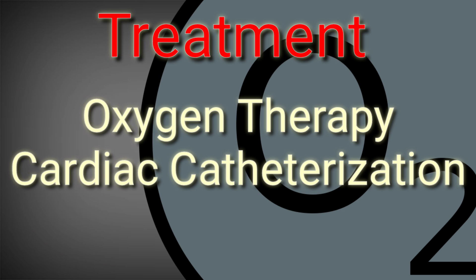Oxygen therapy or a ventilator can help with breathing and ensure both mother and baby receive enough oxygen. A healthcare provider may request insertion of a pulmonary artery catheter to monitor heart function. Medications may also be used to manage blood pressure, and multiple blood platelet and plasma transfusions are often needed to replace blood loss during the hemorrhagic phase.